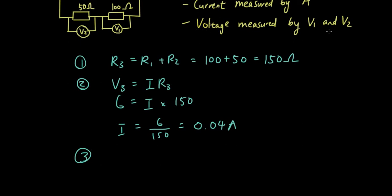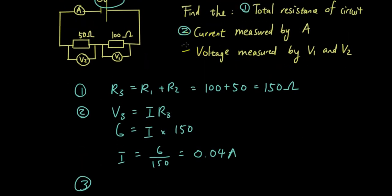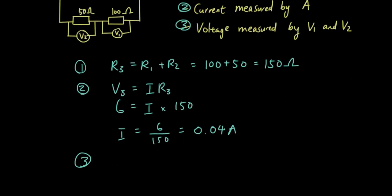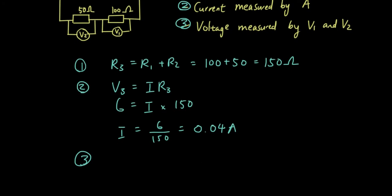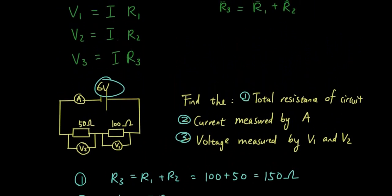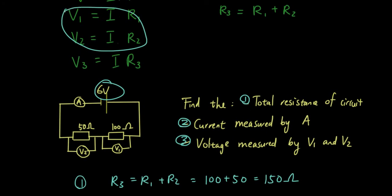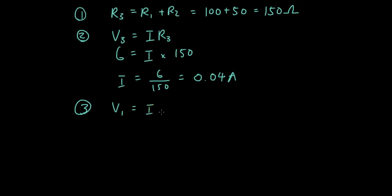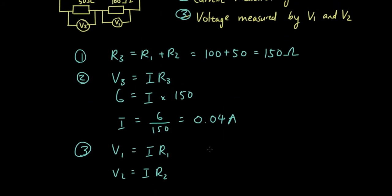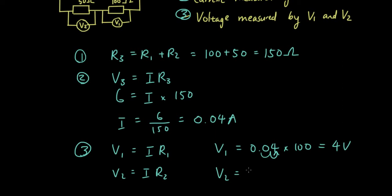Number 3 — the voltage measured by V1 and V2. We need the equations V1 equals I times R1, and V2 equals I times R2. Substituting the current we found: V1 equals 0.04 times 100 — moving the decimal two places to the right — that gives 4 volts. And V2 equals 0.04 times 50, which is 2 volts.